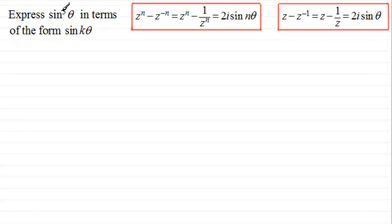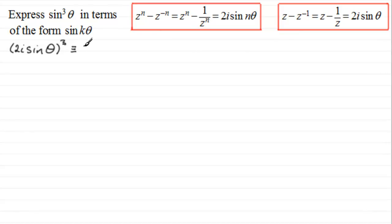When we've got to express sine theta to any power, we take this identity and write 2i sine theta to whatever power we need. So we start by writing 2i sine theta all to the power 3, so that when we expand this we will get sine cubed theta. We know this equals z minus z to the power minus 1, so we can write this as z minus z to the power minus 1, all to the power 3.